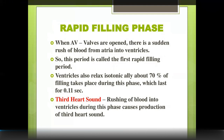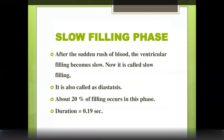Isovolumetric relaxation follows, during which both sets of valves are closed. Then the AV valves open and rapid filling begins — blood rushes directly from the atria into the ventricles. This rushing of blood produces the third heart sound. After rapid filling comes slow filling.